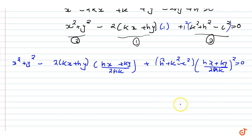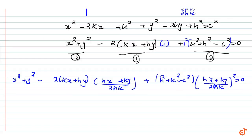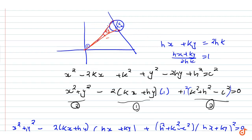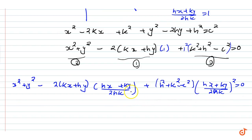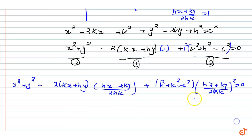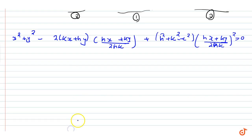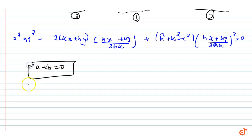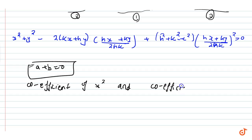This resulting equation is the pair of straight lines joining the origin to the points of intersection. For these lines to be perpendicular, we apply the condition: coefficient of x² plus coefficient of y² equals zero, that is, a plus b equals zero.